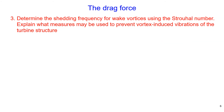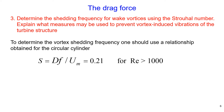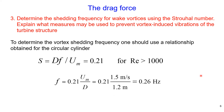In the final part of the problem we need to determine the shedding frequency for wake vortices using the Strouhal number. The Strouhal number is defined as the diameter of the cylinder multiplied by the vortex shedding frequency divided by flow velocity. For high Reynolds numbers greater than 1000 the Strouhal number is approximately constant at around 0.21, and we use this relationship to obtain the vortex shedding frequency, which for our problem is equal to approximately 0.26 Hz.